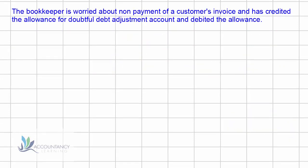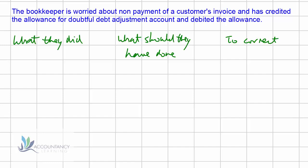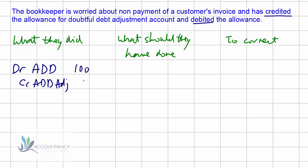Here's another example. The bookkeeper is worried about non-payment of a customer's invoice and has credited the allowance for doubtful debt adjustment account and debited the allowance. Again, set up those three columns on your scrap paper — what did they actually do, what should they have done, and then compare the two to see what needs to be fixed. What they did: they debited the allowance for doubtful debts — let's say 100 — and credited the allowance for doubtful debt adjustment account with 100.